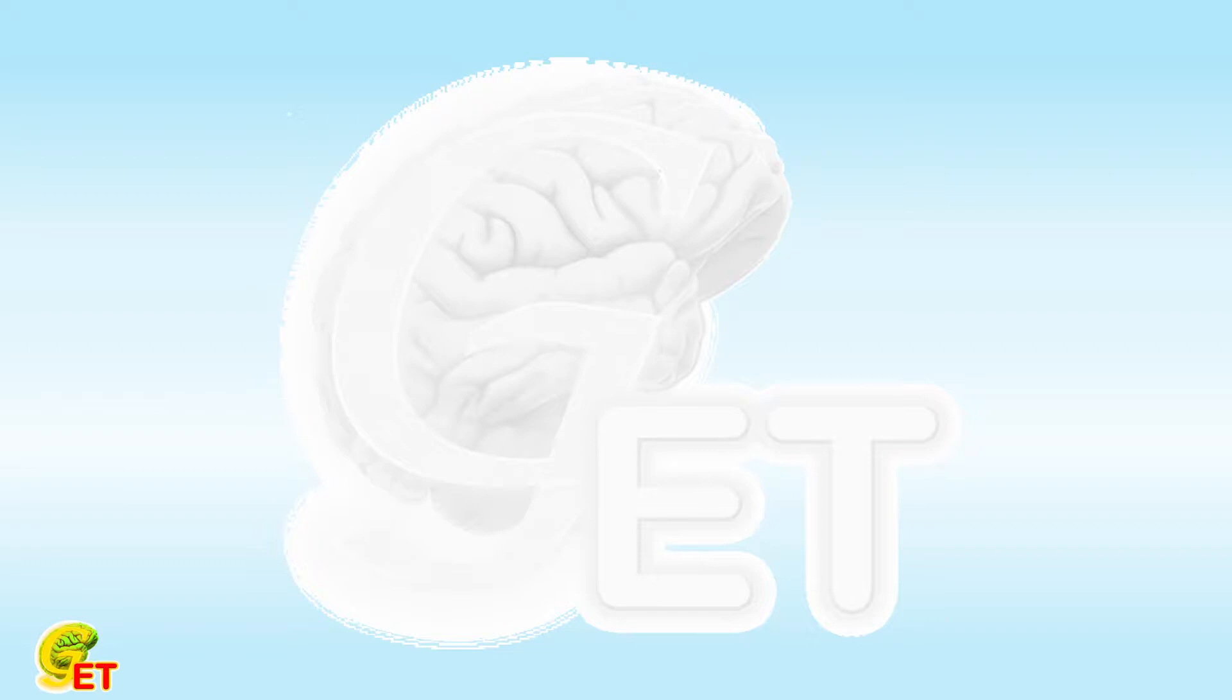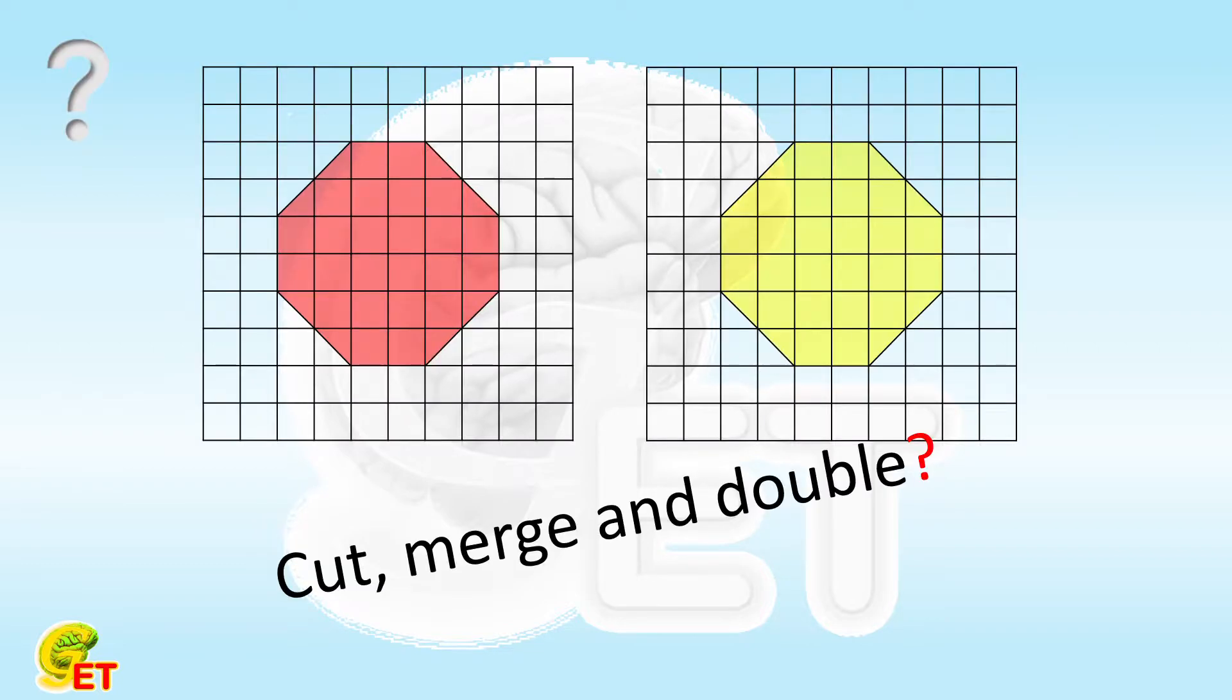Hello, everyone. Puzzles time again. This time, we have two congruent octagons. Can you cut them into several pieces, and by using them, to construct a new octagon, which has a doubled area, and exactly the same shape as these two? Please try to cut into the pieces as few as possible.